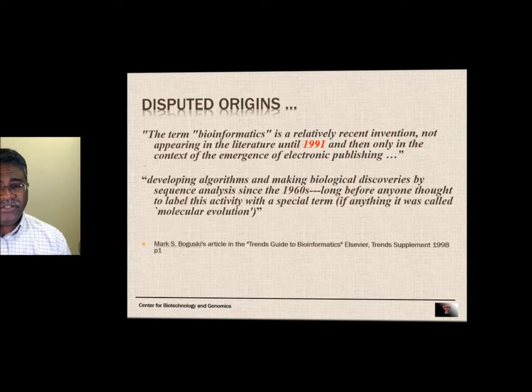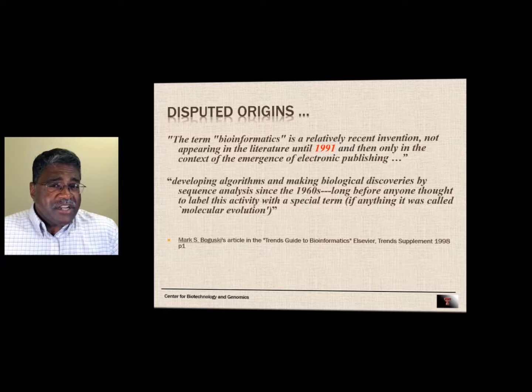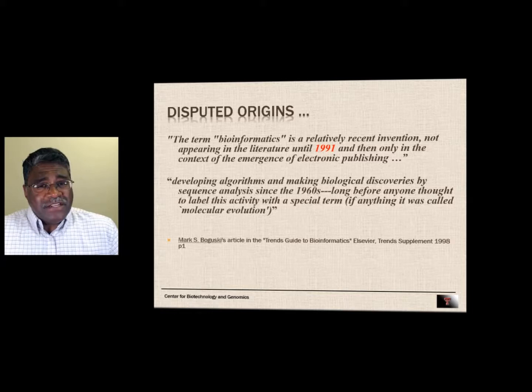Origins are disputed: some argue the term bioinformatics didn't appear until 1991, which is a relatively recent invention. The concepts were beginning to be introduced in the context of the emergence of electronic publishing. In the same article, developing algorithms and making biological discoveries by sequence analysis had been considered since the 1960s, long before anyone thought to label this activity. The disputed origins are more about when the term was really used than about our understanding of bioinformatics.